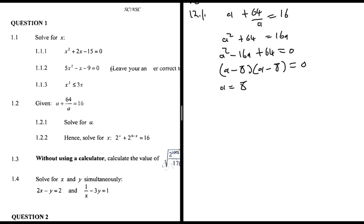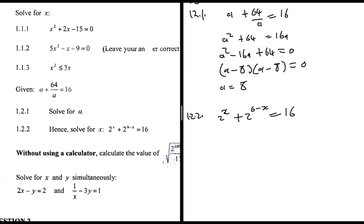For 1.2.2: 2^x + 2^(6-x) = 16. The word 'hence' tells me to apply the same ideas from 1.2.1. I notice I can rewrite 2^(6-x) as 2⁶/2^x = 64/2^x, making the equation look like a + 64/a = 16 if I let a = 2^x.